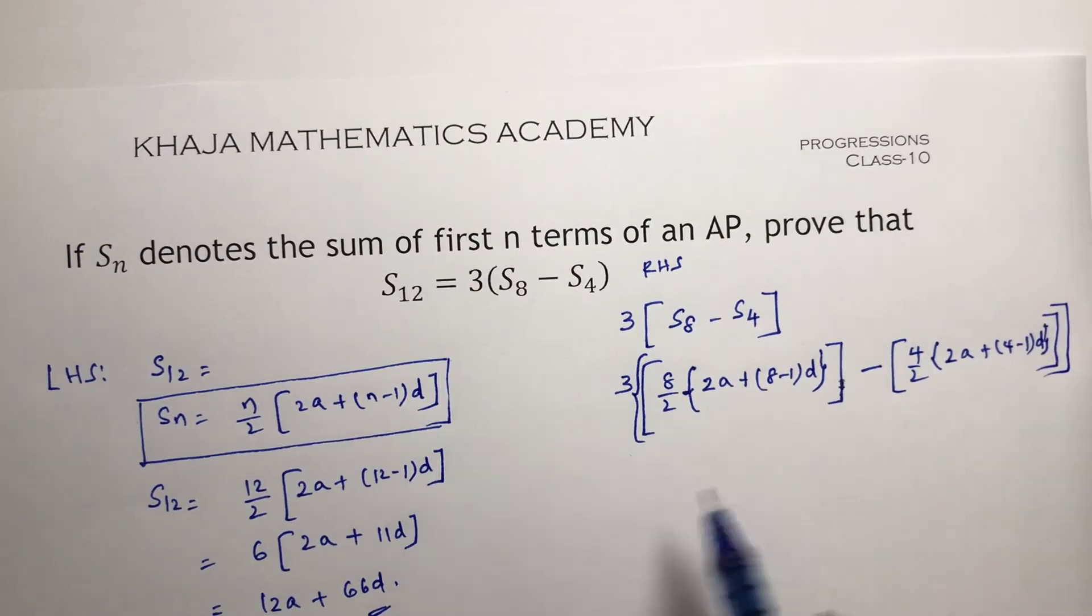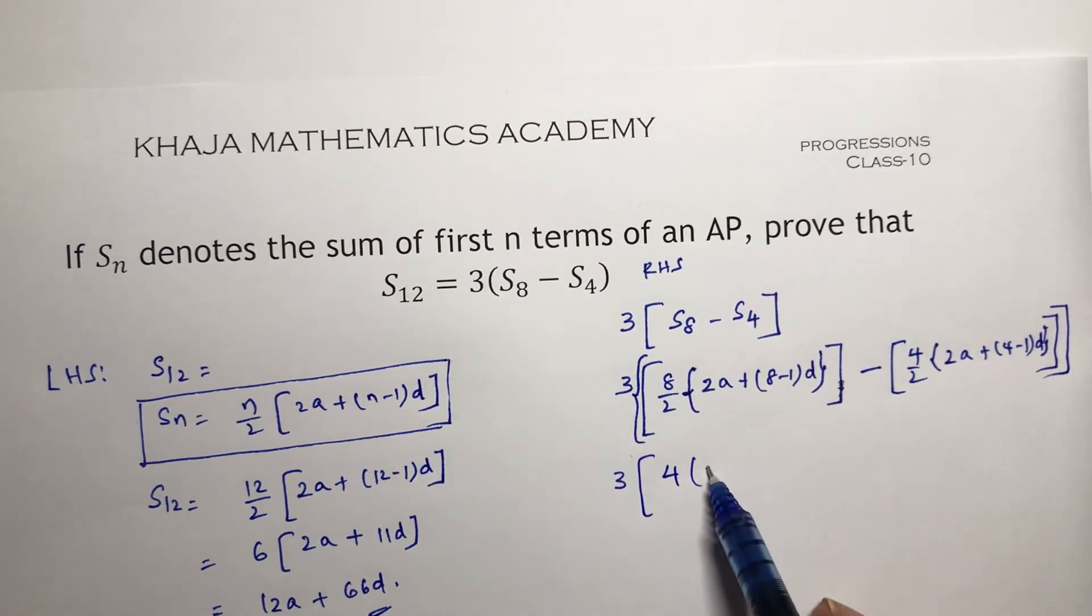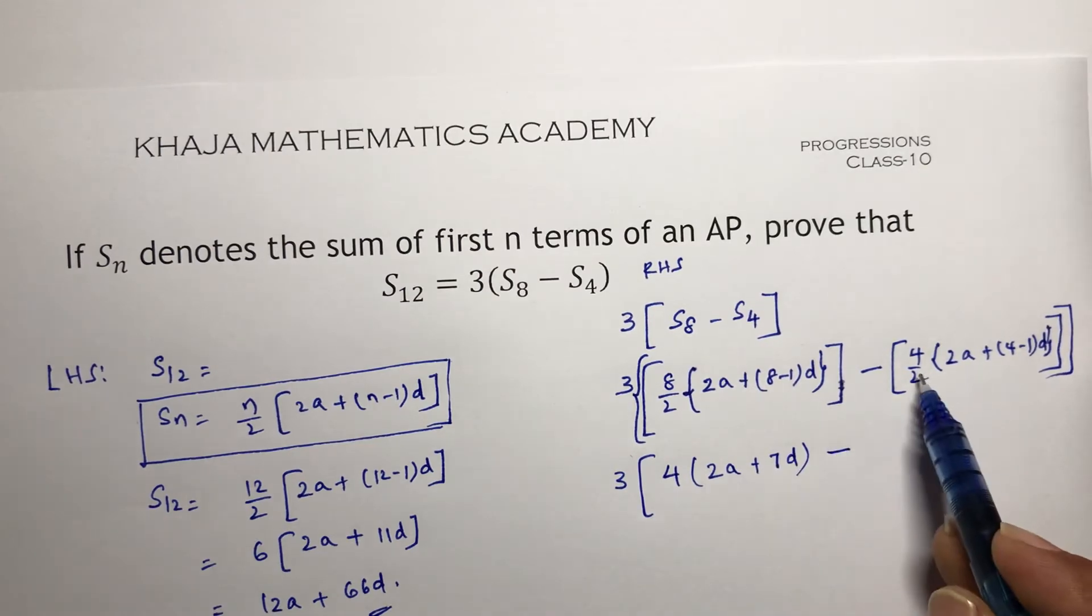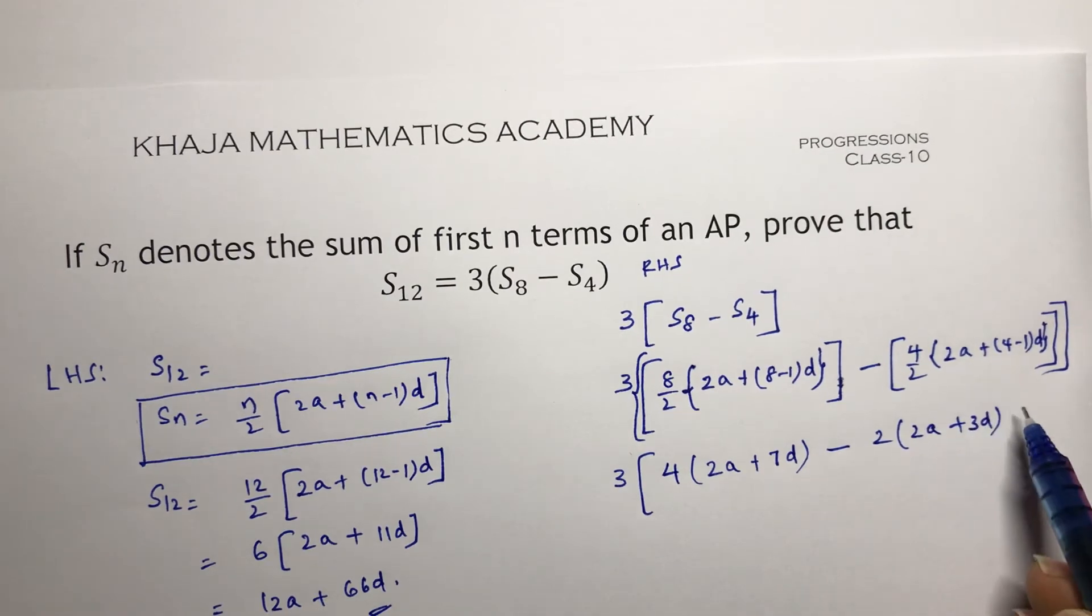So here, 3 into 8 by 2 is 4, 4 into 2A plus 7D minus 4 by 2 is 2, 2 into 2A plus 3D.